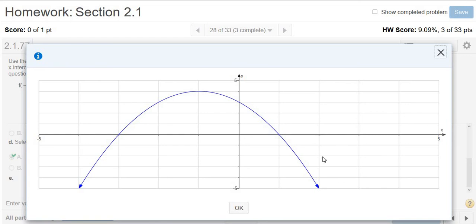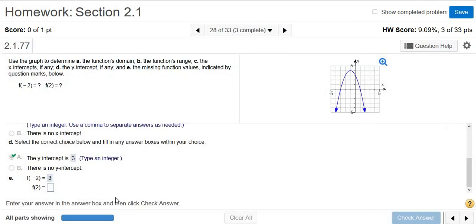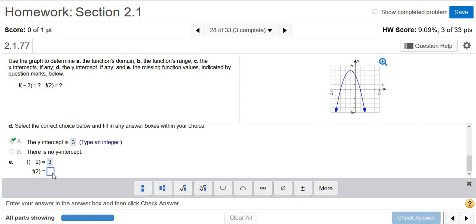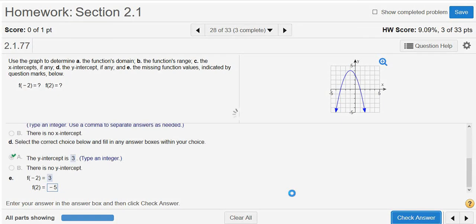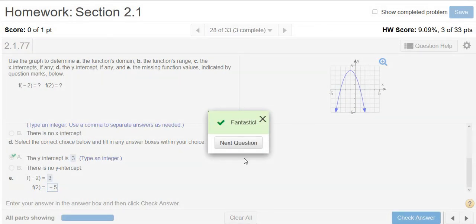So the y-value is 1, 2, 3, 4, 5. So negative 5 should be our y-value. Here we go. So negative 5. Check answer. And looks like we got it right. That's it.